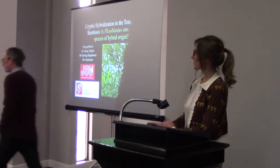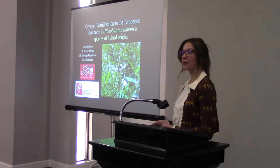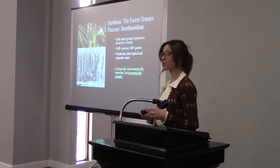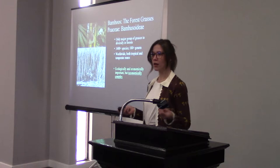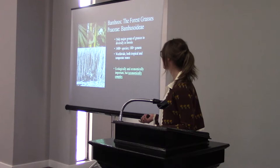My name is Morgan Brown, and this presentation is on cryptic hybridization in the temperate bamboos. If you didn't know, bamboos are actually a grass. In fact, they are the only major group of grasses that diversify in the forest. It's a really big group encompassing over 1,400 species and over 100 genera, and they grow worldwide in temperate and tropical zones. For those reasons, they are ecologically and economically important, but they're also taxonomically complex, which I'll touch on later in this presentation.